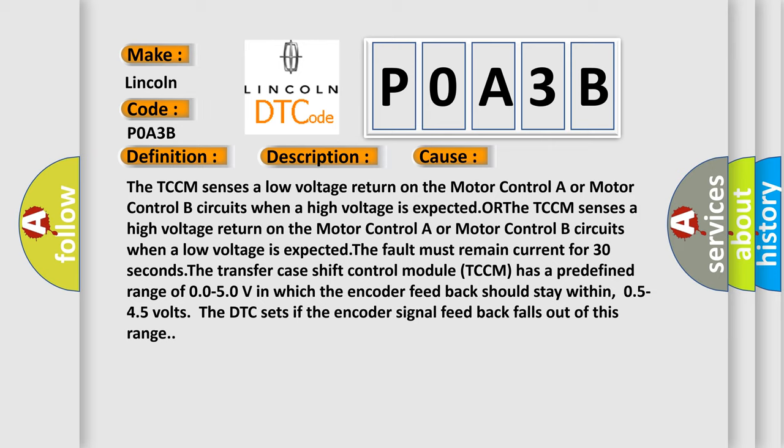The TCCM senses a low voltage return on the Motor Control A or Motor Control B circuits when a high voltage is expected. The fault must remain current for 30 seconds.